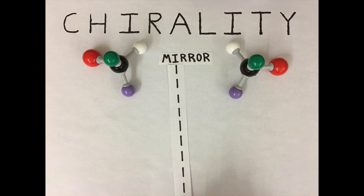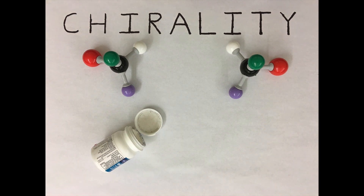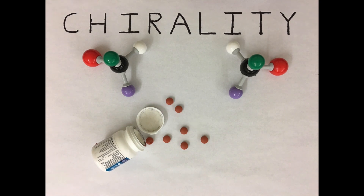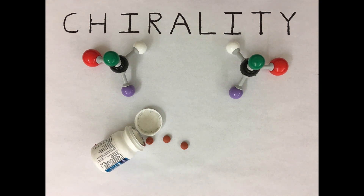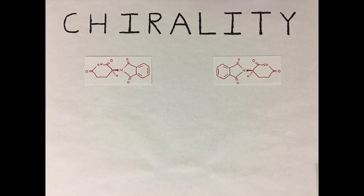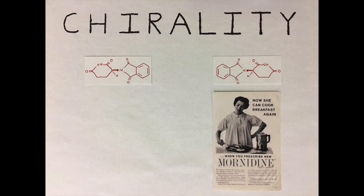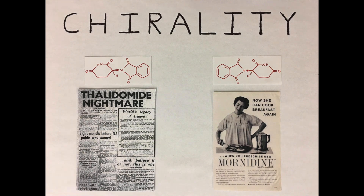More than half of the common medicines we take have this property. Doctors first discovered how much chirality really mattered in medicine when treating morning sickness in pregnant women with a mix of R and S, or left and right hand thalidomide. Unfortunately, only one hand was effective as the medicine, while the other caused some pretty serious birth defects in thousands of children.